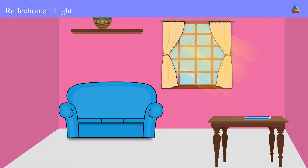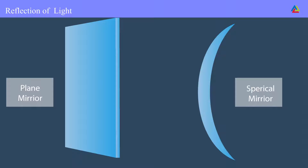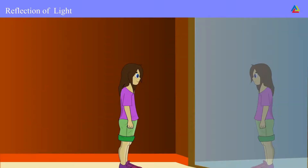There are two laws of reflection of light. One: the angle of incidence is equal to the angle of reflection. Two: the incident ray, the normal to the mirror, and the reflected ray all lie in the same plane. These laws of reflection are applicable to all types of reflecting surfaces. A plane mirror forms a virtual, erect, equal, and laterally inverted image of an object.